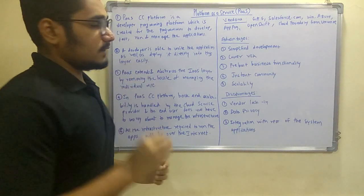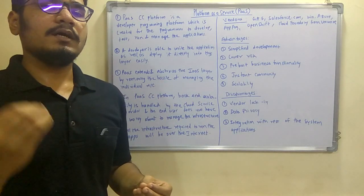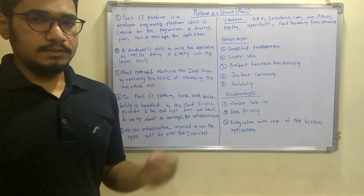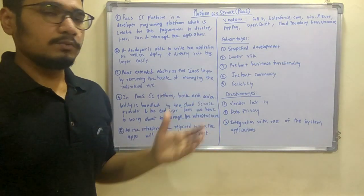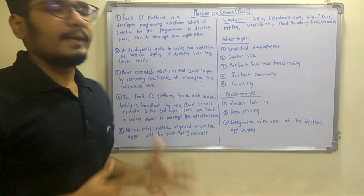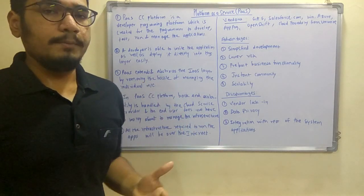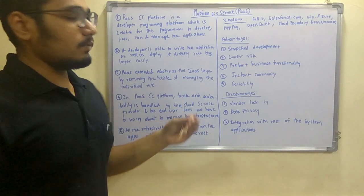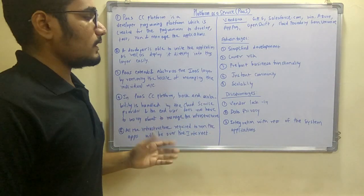Next is predefined business functionality. Since it comes from different vendors, different vendors have different kinds of designing and coding rules that you have to follow. Instant community is a big advantage of PaaS. If you get stuck at any coding or logical level, or if you need any kinds of APIs, you just have to contact those particular vendors who are responsible for holding your application. You can query at any time and get results.